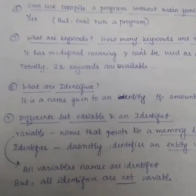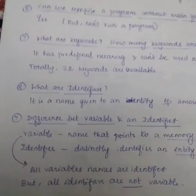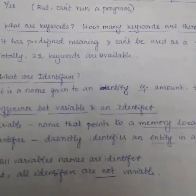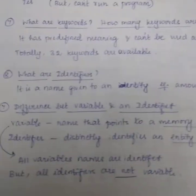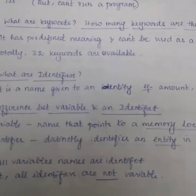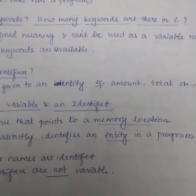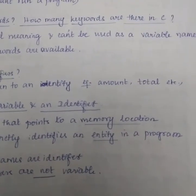What is the difference between variable and an identifier? It is an important thing. Variable name points to a memory location, but identifiers distinctly identify an entity in a program.